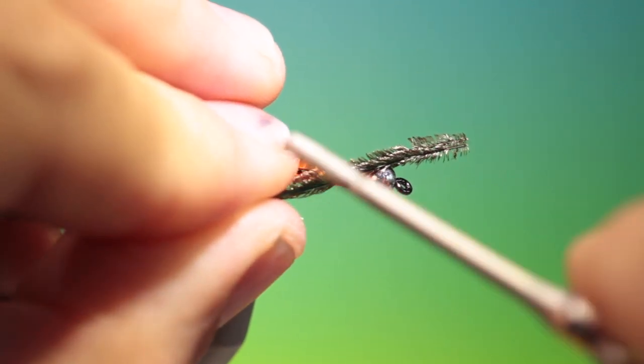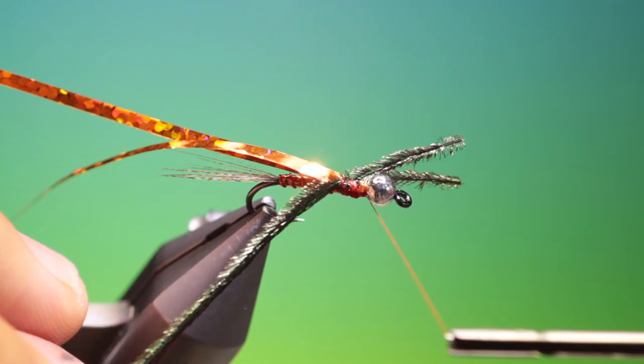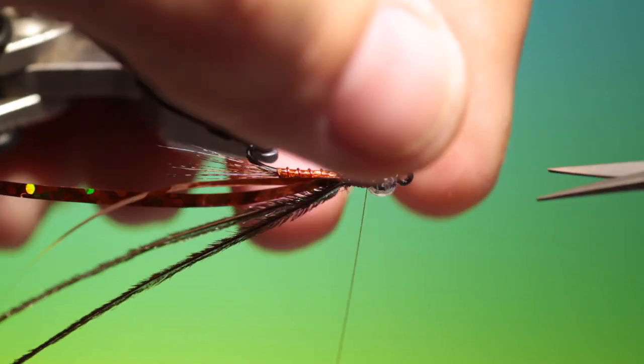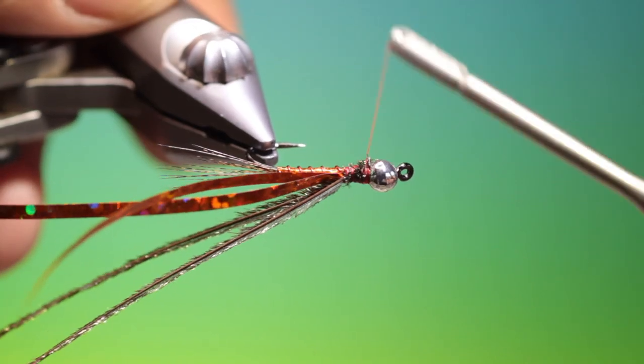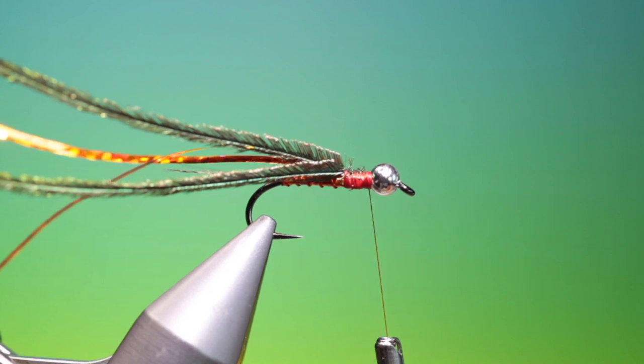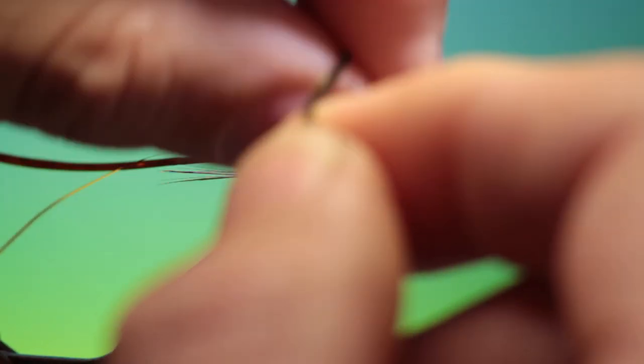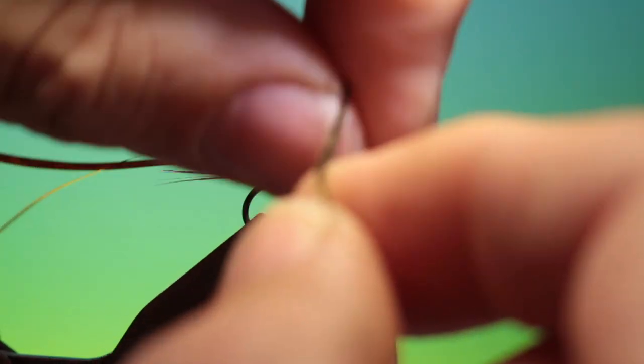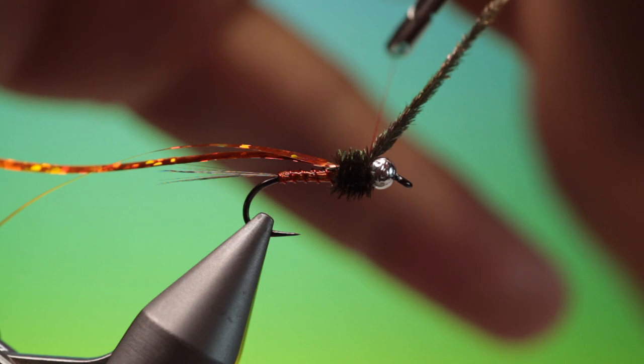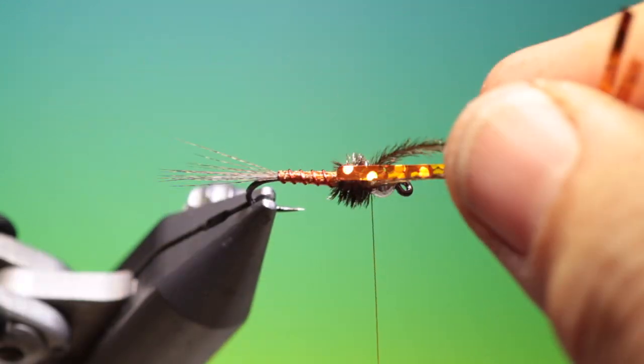Couple of peacock herls. Tie these in again, tie it into the abdomen and go forward. Remove the back ends and a couple turns over them to tidy them up. Take the peacock herl and build up a nice, hurley thorax. That's looking great. We can remove these.